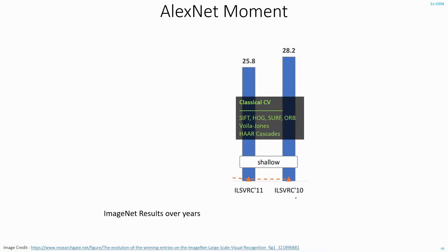Before we start the chapter on CNNs, let's look at the ImageNet results over the years. In the year 2010 and 2011, the winning models were based on classical computer vision techniques. In fact, they both used a variation of SIFT along with SVM for classification.